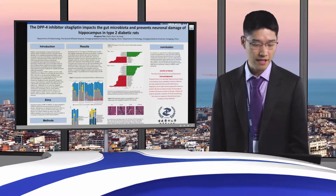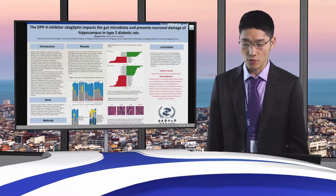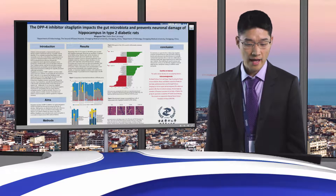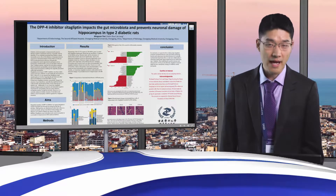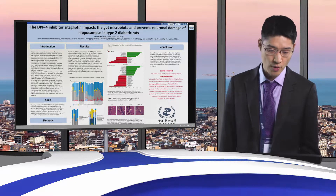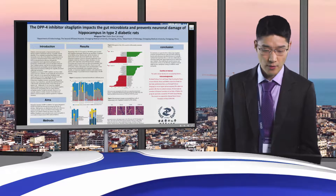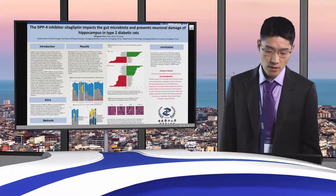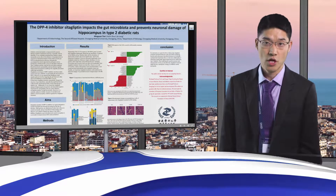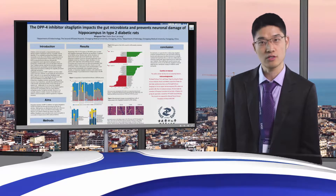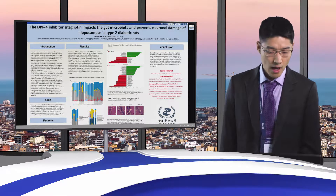The DPP-4 inhibitor cetylchlyptin impacts gut microbiota and prevents neuro damage of hippocampus in type 2 diabetic rats. Diabetic central neuropathy is characterized by neuro damage, cognitive impairment, and may eventually result in dementia. It was originally postulated that diabetic central neuropathy occurs due to the influence of hyperglycemia on the structural and functional domains of the brain.